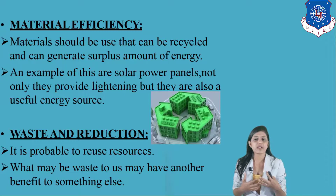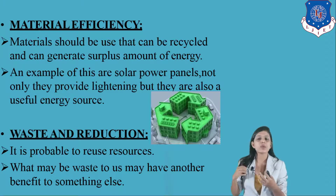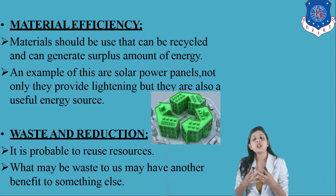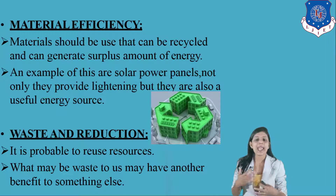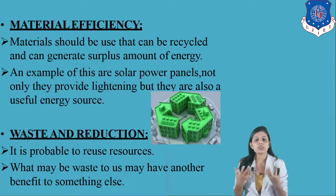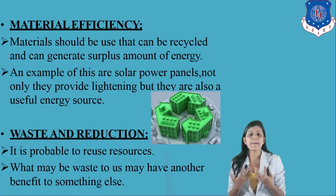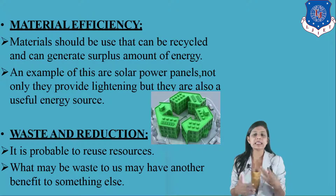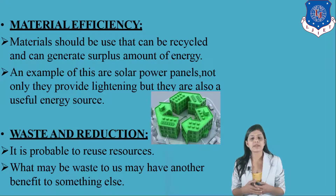For material efficiency, materials should be used that can be recycled and generate a surplus amount of energy. An example of this is solar power plants — they not only provide lighting but are also a useful energy resource, utilizing resources again and again efficiently. For waste reduction, things which are waste to us can be utilized elsewhere. For example, ashes generated from burning coal are used to make bricks, thereby recycling waste and reducing overall waste output.